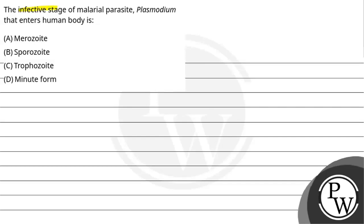Let's look at the question: the infected stage of the malarial parasite Plasmodium that enters the human body is — option A: Neurozoid, option B: Sporozoid, option C: Trophozoid, and option D: Minute form.